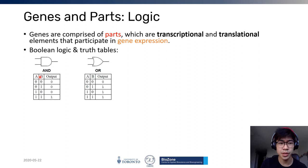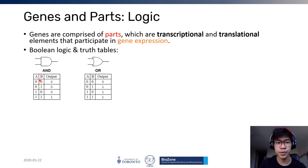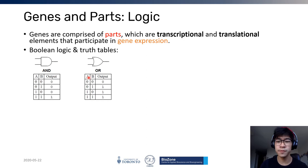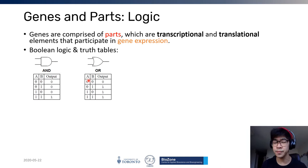In a truth table, A and B indicate the two inputs. An AND gate requires both signals to produce an output: no output if A alone or B alone is present, and an output of 1 only when both are present. The OR gate produces an output when either A or B is present, or when both are present, outputting 1; it outputs 0 only when neither signal is present.